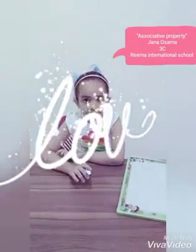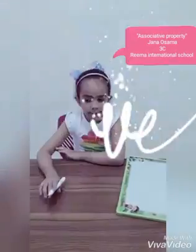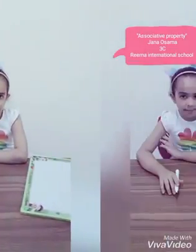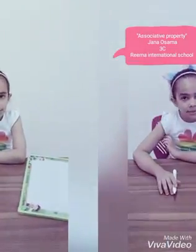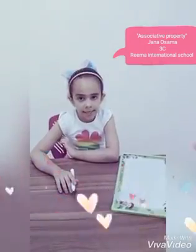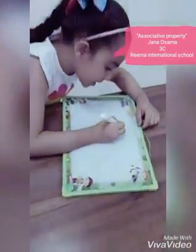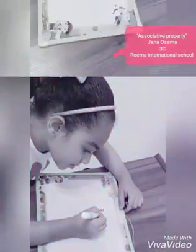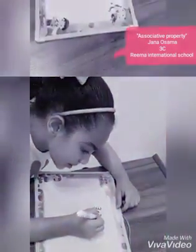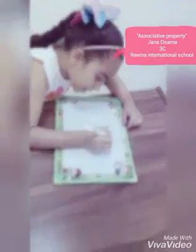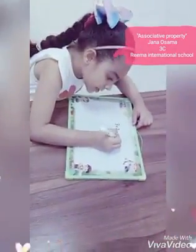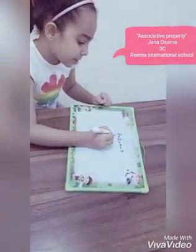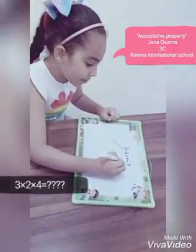Hello teacher! Today let me show you how we can multiply three numbers using the proven property of multiplication. 3 multiply 2 multiply 4 equals what? We have two ways.